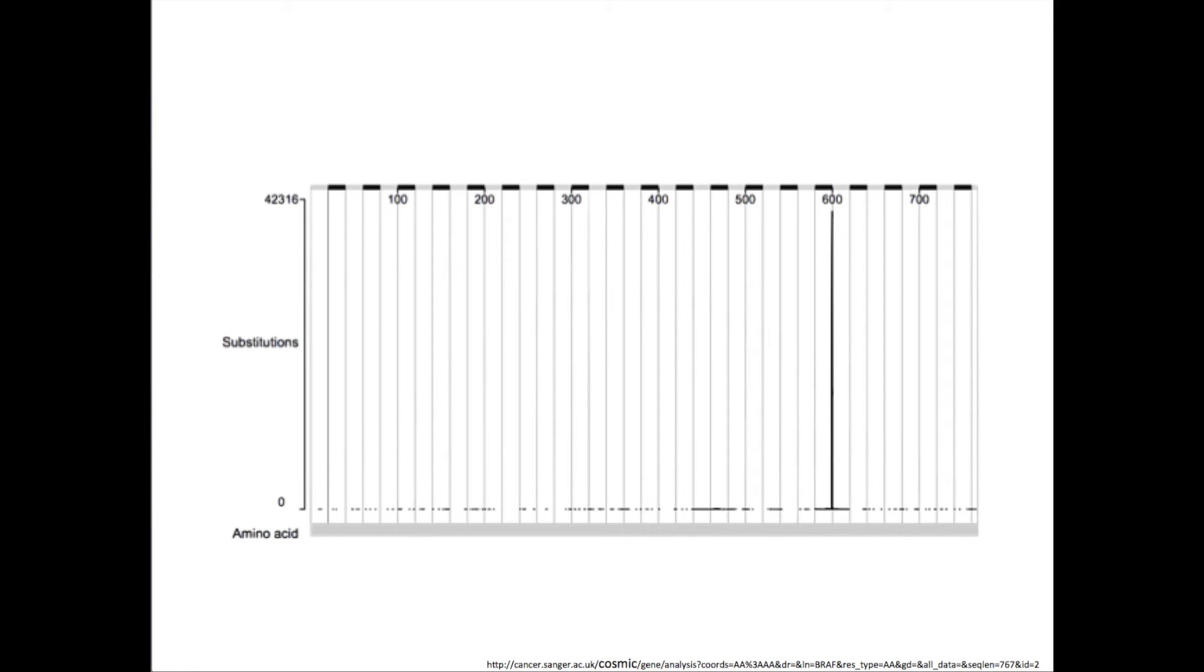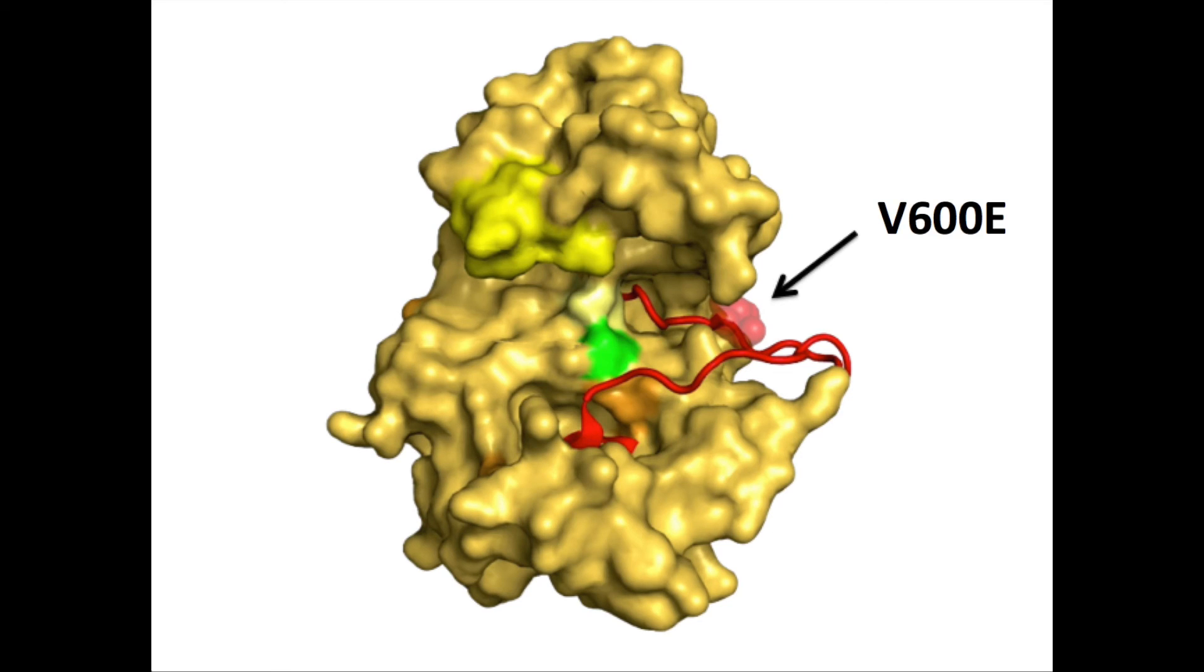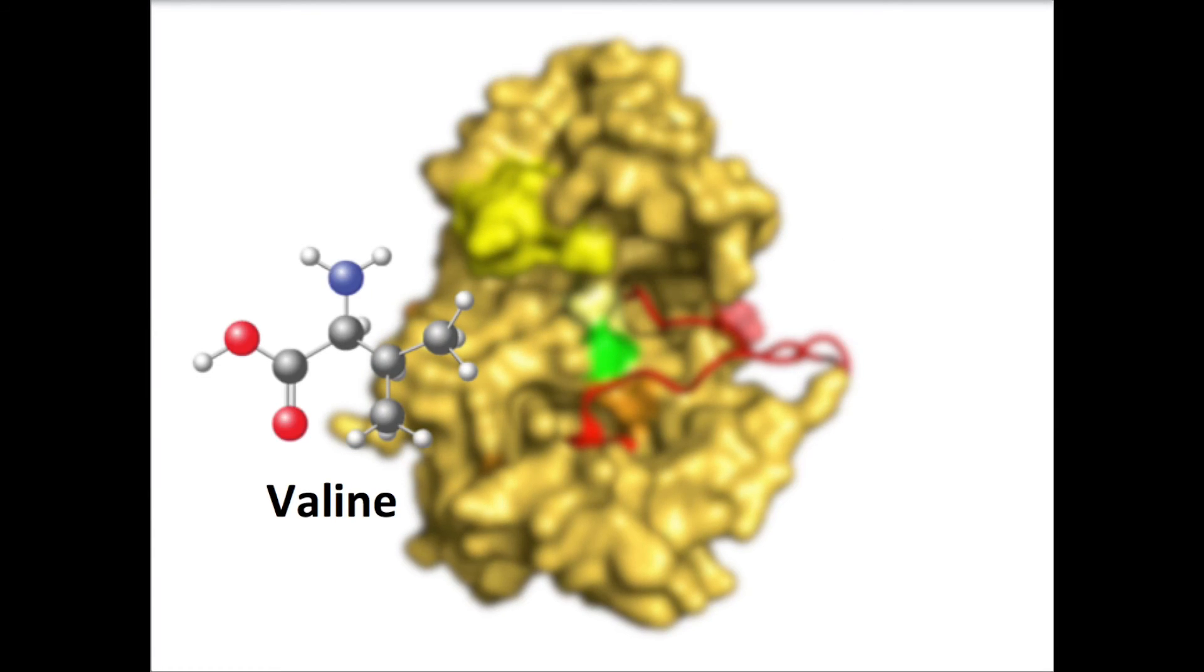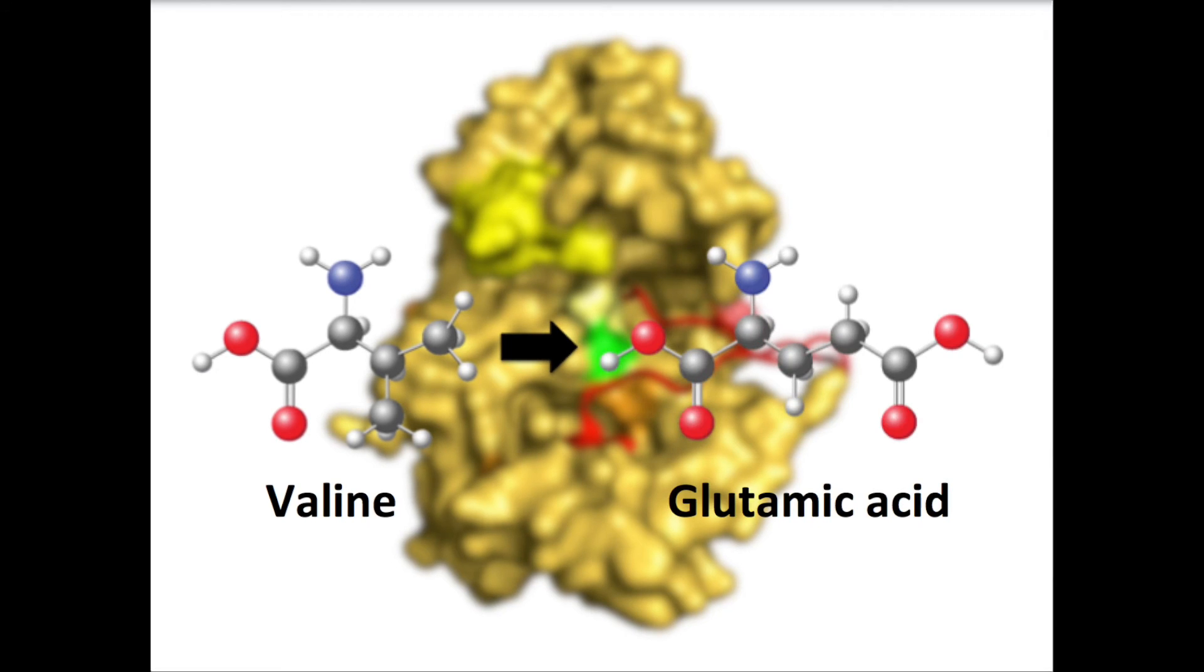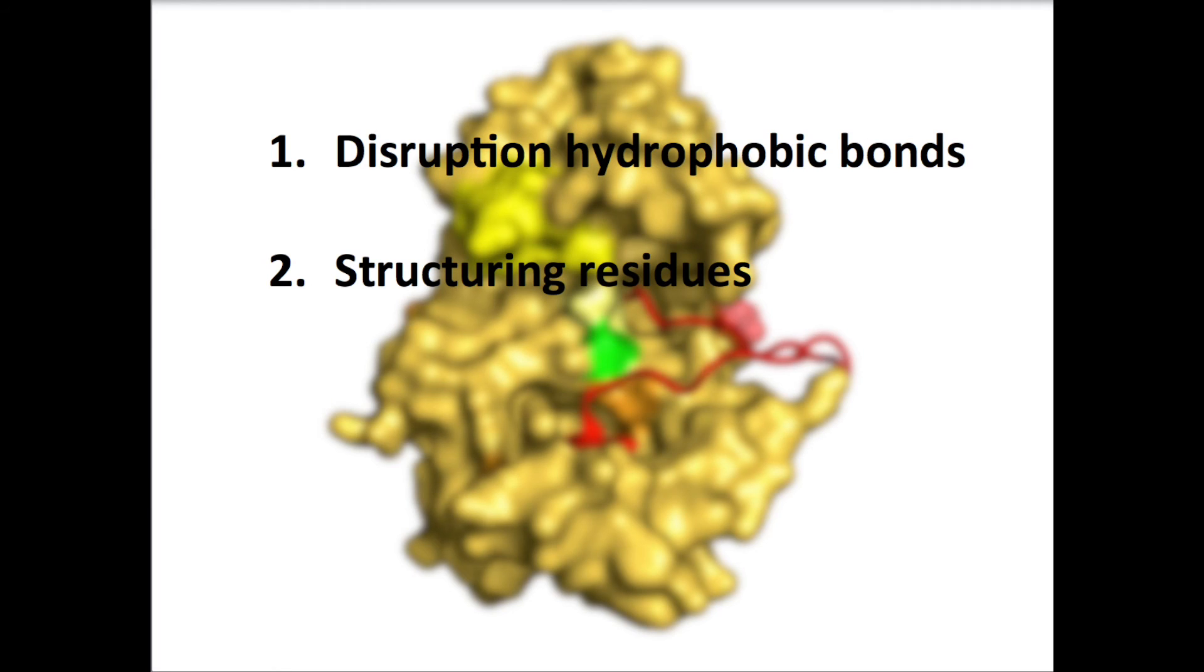60% of melanomas have a BRAF mutation, of which 90% is a V600E mutation. This means that on position 600 of the amino acid chain, which is in CR3, a valine is substituted by a glutamic acid. Valine is neutrally charged, while glutamic acid has a negative charge. Therefore, this mutation interferes with two things. Firstly, the hydrophobic bonds in the ATP catalytic cleft are disrupted. And secondly, it organizes the residues that can phosphorylate MEK and can bind to ATP.